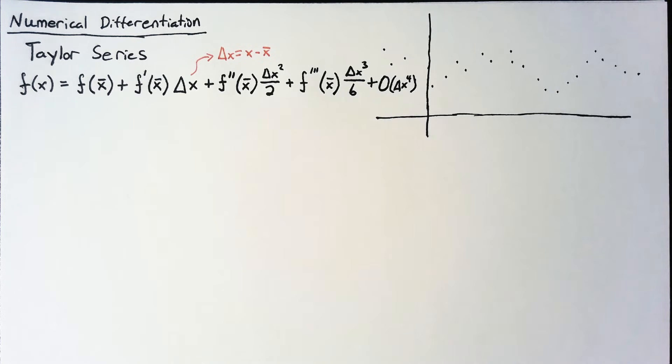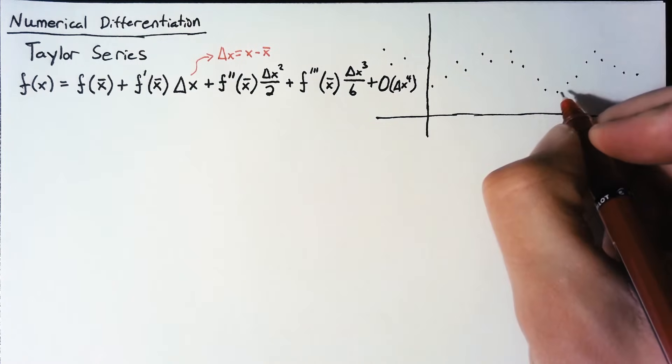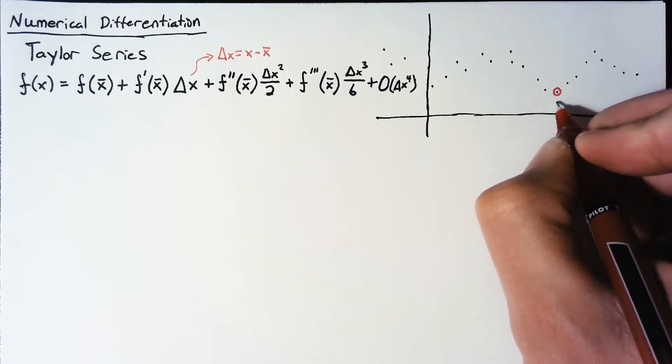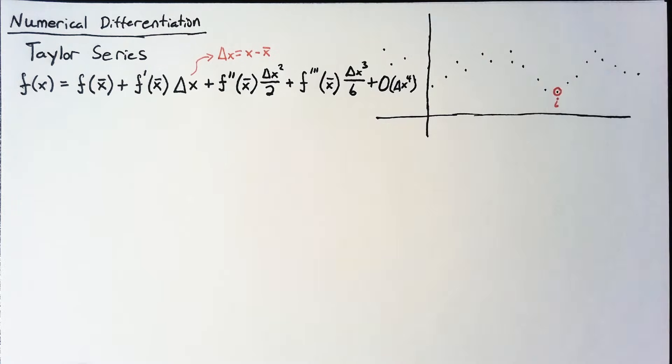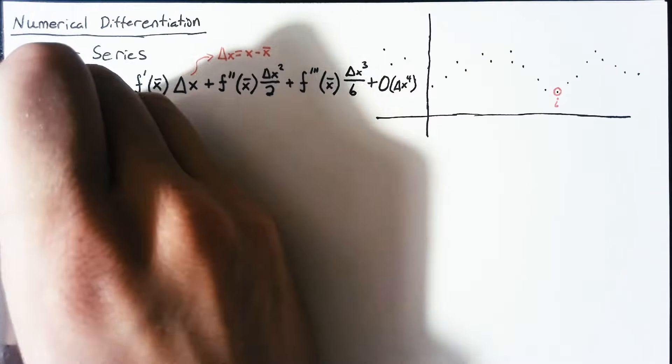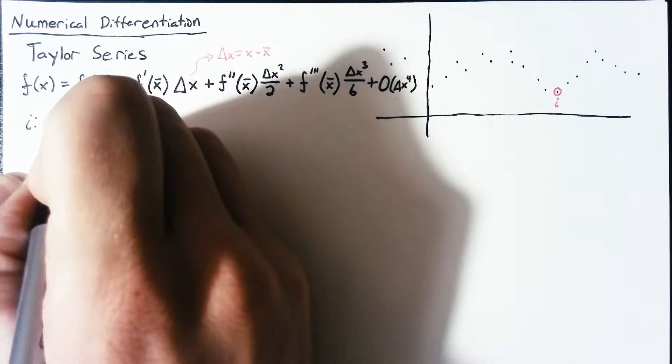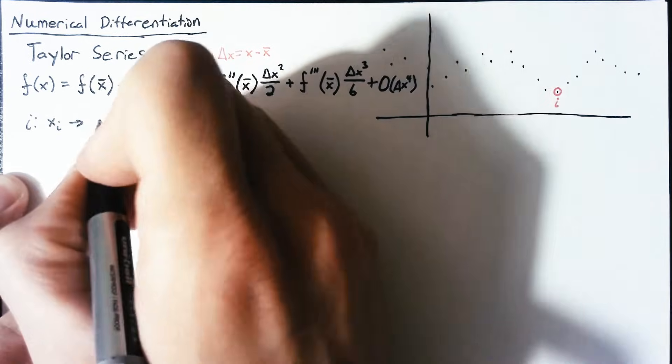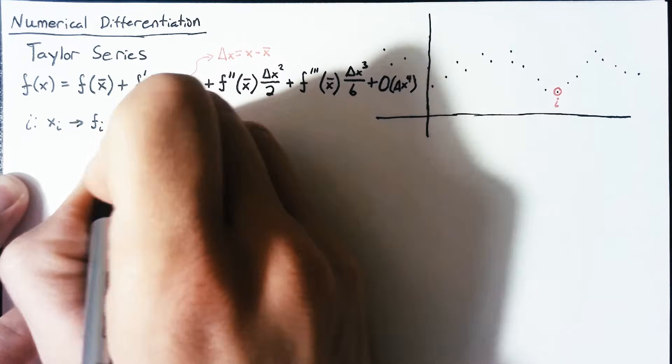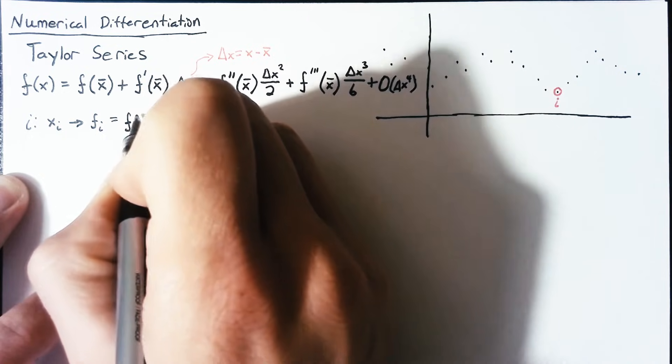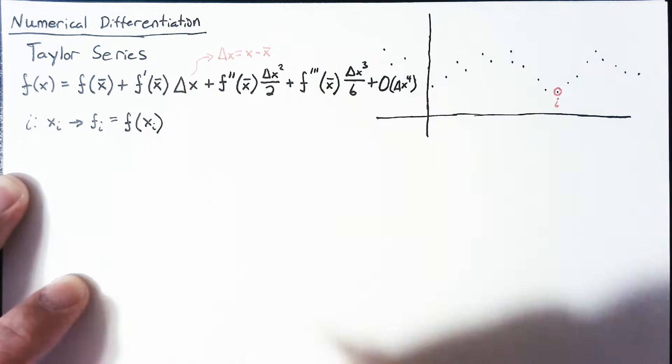Now, we'd like to use this in order to calculate a derivative. And we want that at a specific point in our data. So let's say that we're interested in the derivative at this point right here. I'm going to call this point i. So at point i, we're going to have an x of i. And that x sub i is going to yield an f sub i, which is just equal to the function evaluation of x sub i.